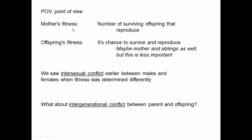For the mother, the mother's fitness is determined by the number of surviving offspring that reproduce. For the offspring, its fitness is determined by its chance to survive and reproduce. From a genetic point of view, maybe the mother and siblings also influence fitness as well, because they contain many of the same genes, but that is clearly less important, because although they may contain some of the same genes, they're not going to contain the exact same combination of genes as this individual.